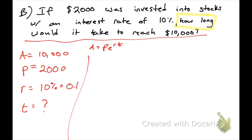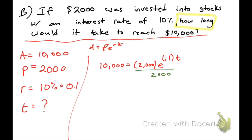Entering into APERT: ten thousand equals two thousand times E raised to 0.1 times T. Notice that our variable T is in the exponent. To isolate it, our first step is to divide both sides by two thousand. Ten thousand divided by two thousand gives us five. So we have five equals E raised to 0.1T.